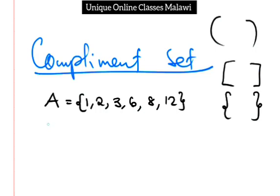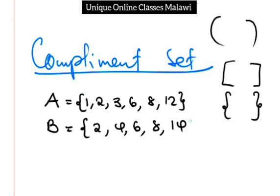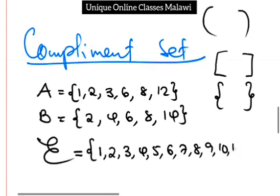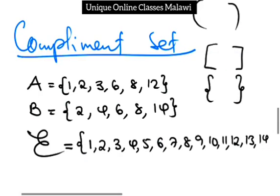Set B equals 2, 4, 6, 8, 14. Then the universal set is 1, 2, 3, 4, 5, 6, 7, 8, 9, 10, 11, 12, 13, and 14. We have that universal set.